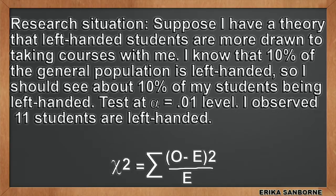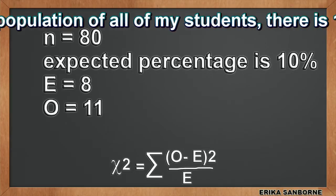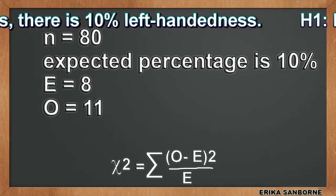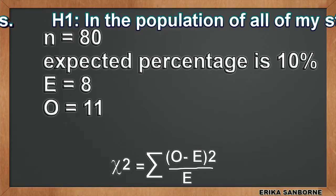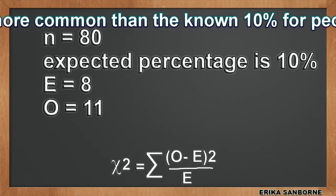Suppose I have a theory that left-handed students are more drawn to taking courses with me. I know that 10% of the population in general is left-handed, so I should see about 10% of my students being left-handed — that's what I'd expect. I need to conduct a statistical test to see how well my observed frequencies fit with the expected frequencies. Let's test at the 1% level. Sample size is 80. The expected percentage to be left-handed is 10%, so my expected frequency is 8, which is 80 times 0.10. The basis for my expected frequency is known statistics of 10% left-handedness for people in general, and my observed frequency was 11.